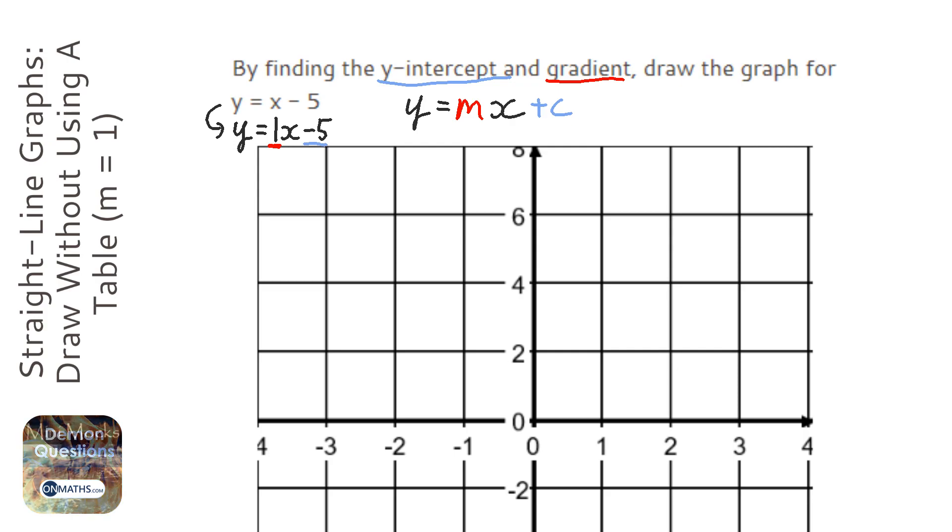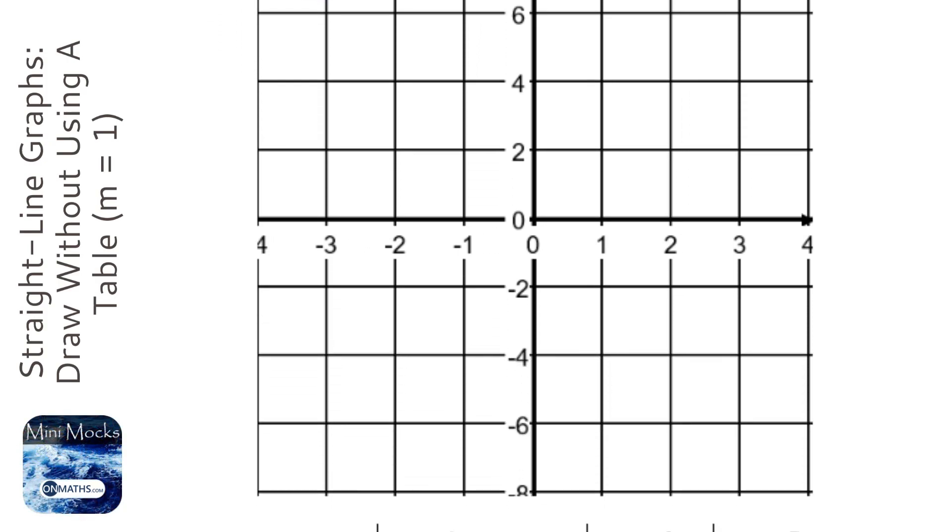The y-intercept is the first thing to plot because that's where it hits the y-axis. The gradient being 1 means for every 1 it goes to the right, it's going to go up 1.